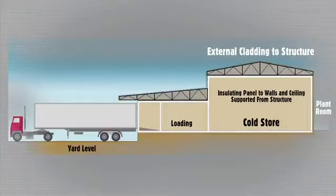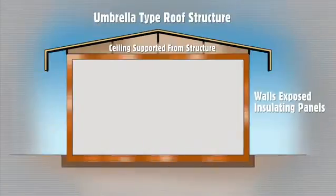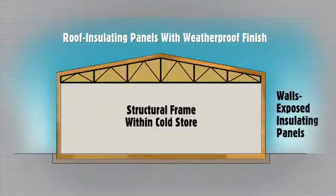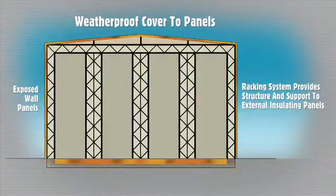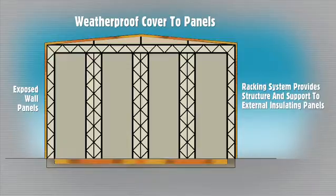For large cold store buildings, there are four different options. The first is an internally insulated store, where an existing building is lined with insulated panels. The second is an externally insulated store, where insulation panels are applied to the outside of the structure. The third is a panel-based store, using pre-fabricated panels assembled on a framework so the store is self-supporting. The fourth is a high-rise store, which is also panel-based but relies on the pallet racking structure to hold up the panels.